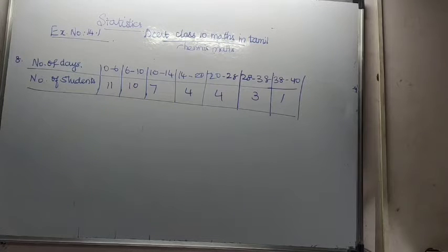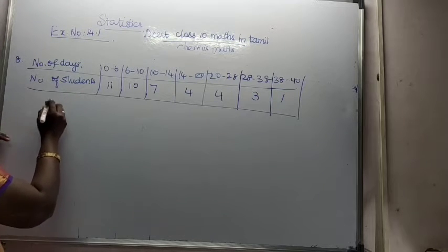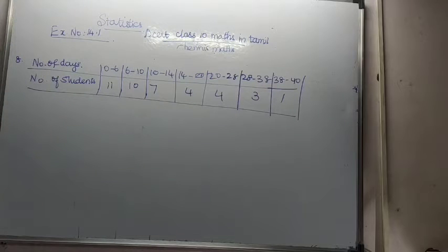How many mean number of days the students were absent? See here, how many students have they given? 40 students. Total, the summation F is 40.